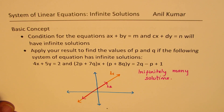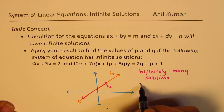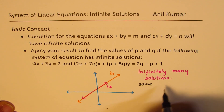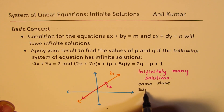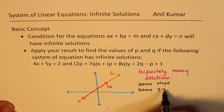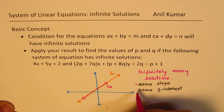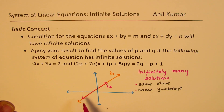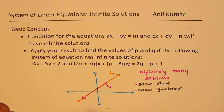Now, for that, the basic condition is that the slopes should be the same. And the second condition is the same y-intercept. These are the two conditions which should be met. Then we can say that the two lines are overlapping and the system formed by these will have infinitely many solutions.